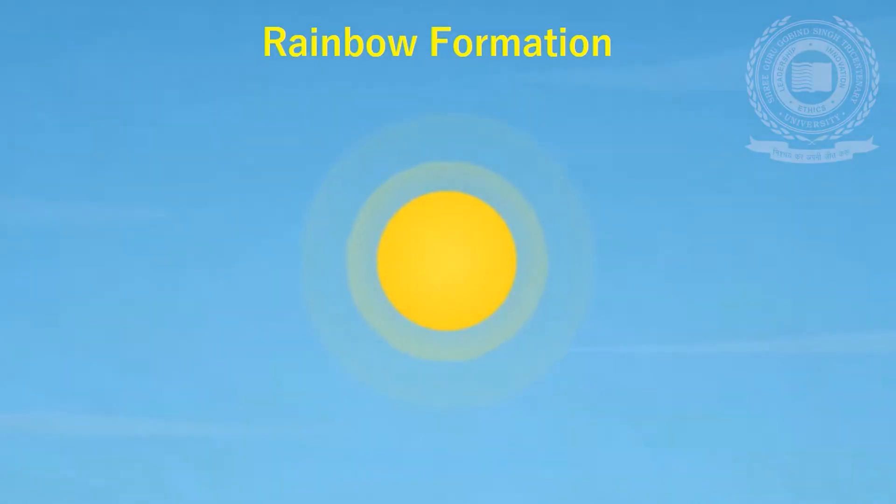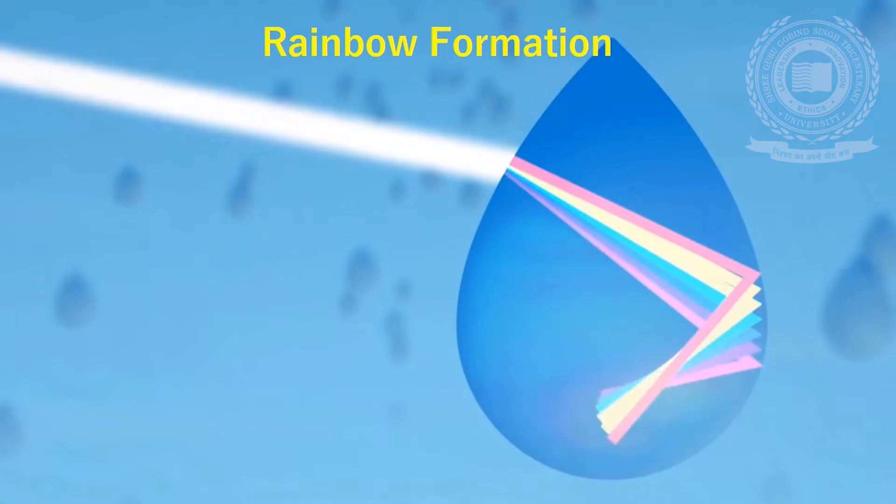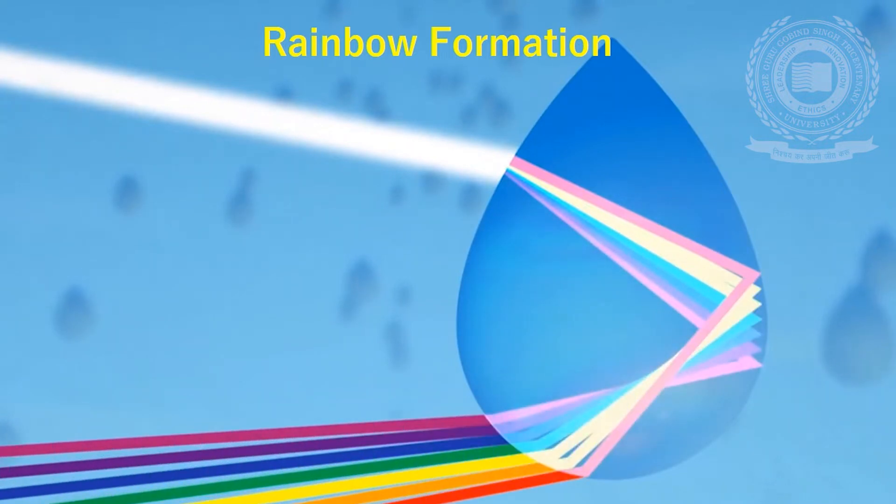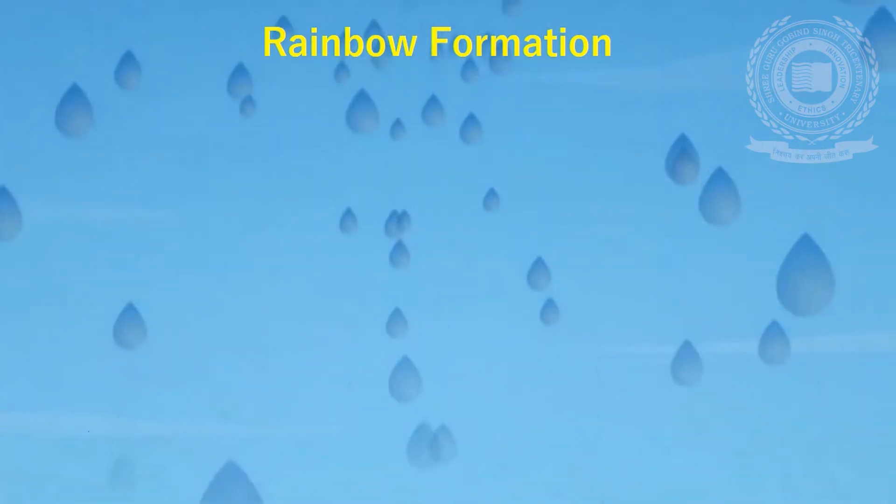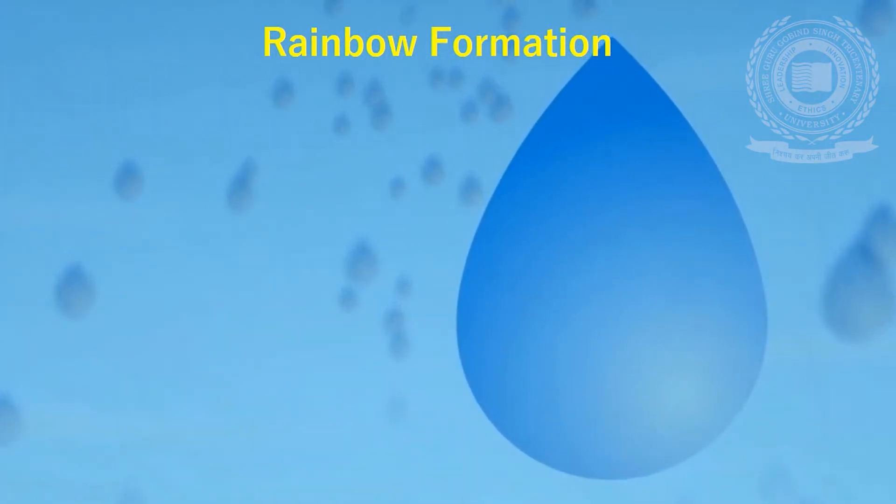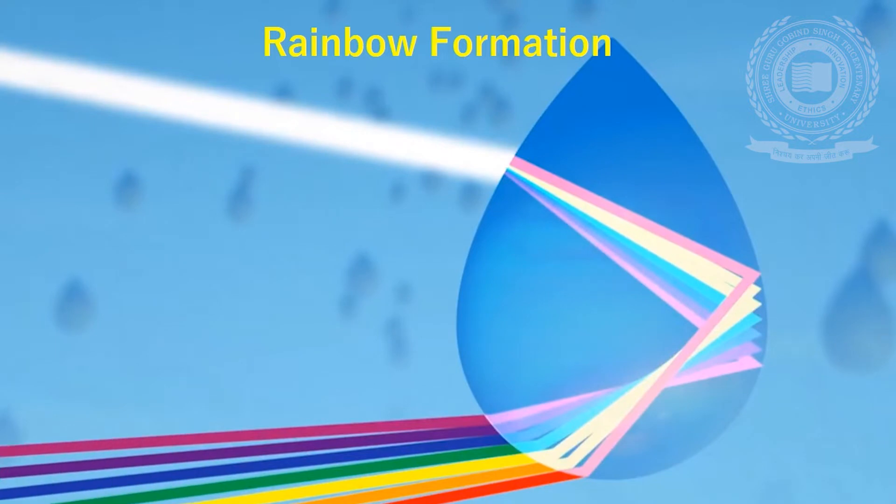This concept was used to describe the rainbow of colours. A rainbow is a natural spectrum appearing in the sky after a rain shower due to the dispersion of sunlight by tiny water droplets present in the atmosphere. A rainbow is always formed in a direction opposite to that of the sun because the water droplets act like small prisms.